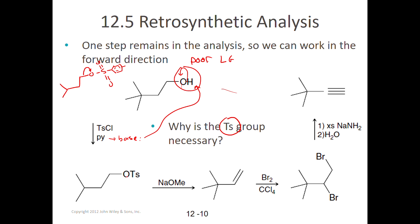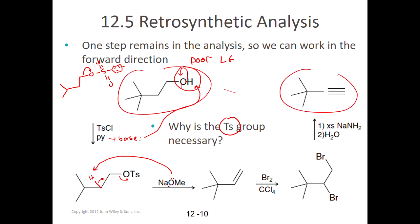Once I convert the OH into a leaving group, I just need a base to pick off the hydrogen that's anti-periplanar to the leaving group. The electrons swing in and push that leaving group out, making the alkene. I've now solved that synthesis — at least one method to get from point A to point B. There may be other methods involving other reactions. To be successful on exams, you want to have mastered all the reactions covered so far.